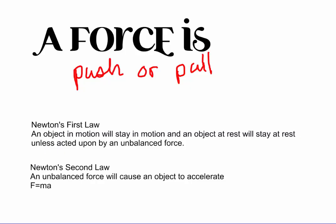Newton's first law says that an object in motion will stay in motion and an object at rest will stay at rest unless acted on by an outside unbalanced force. The key is an unbalanced force — it's going to keep doing what it's doing as long as the forces are balanced. If unbalanced, that's going to change.